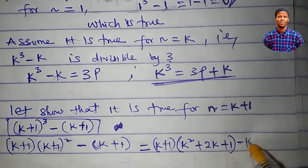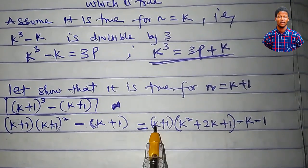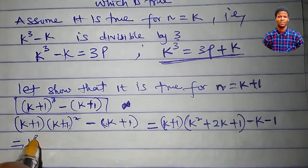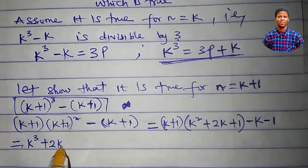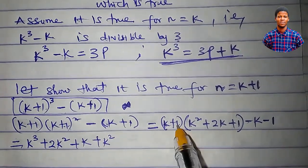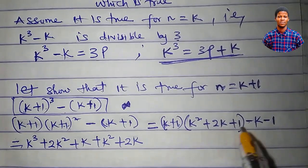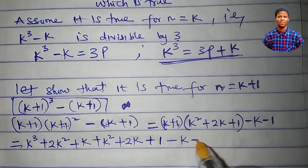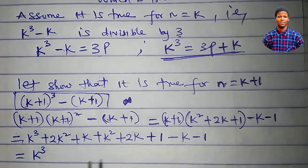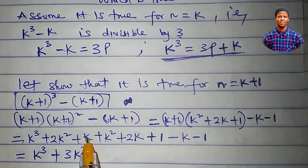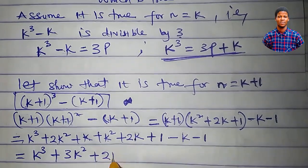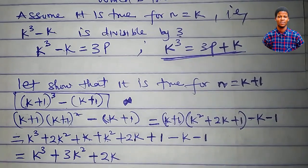Expanding the full bracket: k times k² is k³; k times 2k is 2k²; k times 1 is k; 1 times k² is k²; 1 times 2k is 2k; 1 times 1 is 1; then minus k minus 1. Simplifying: k³, then 2k² plus k² is 3k², then k plus 2k is 3k, then 3k minus k is 2k, and 1 minus 1 is 0. So we have k³ plus 3k² plus 2k.